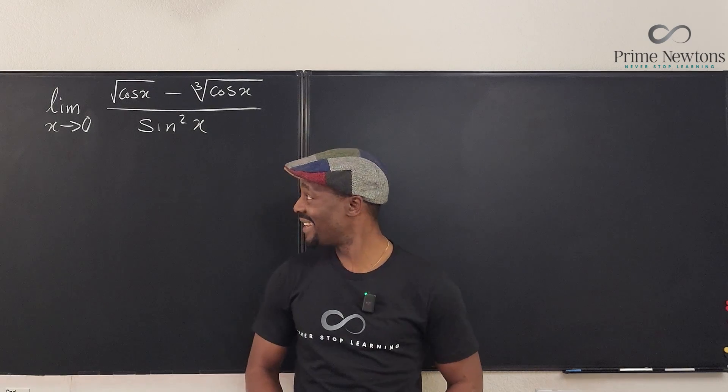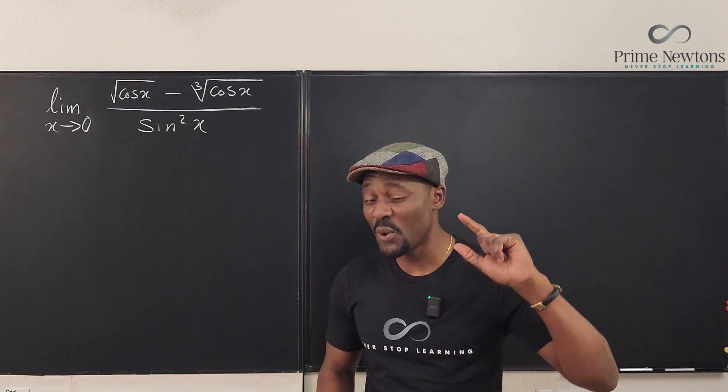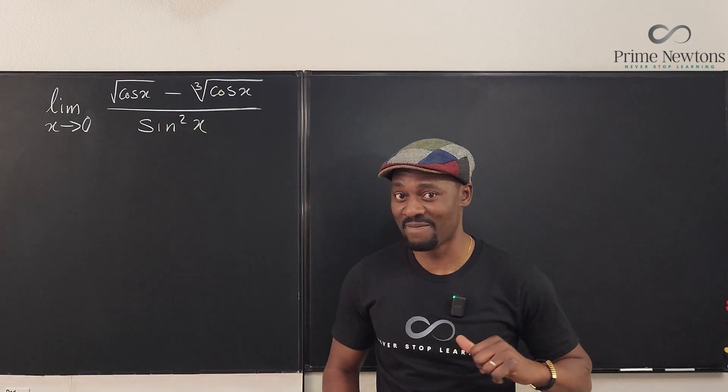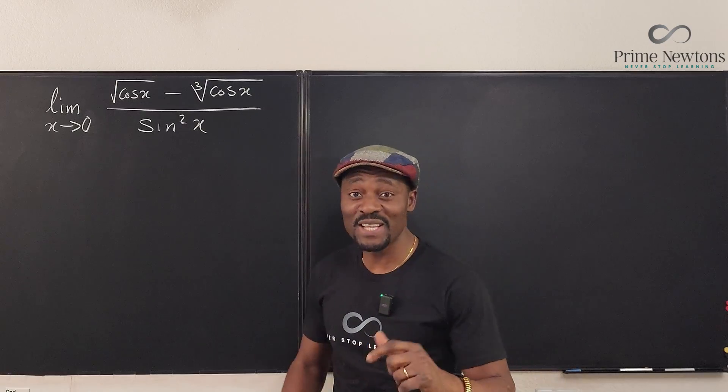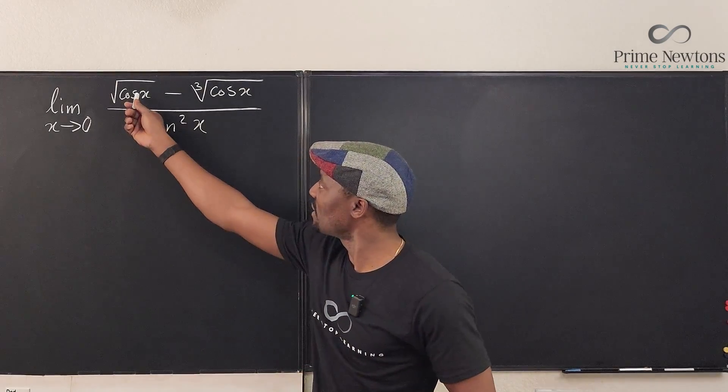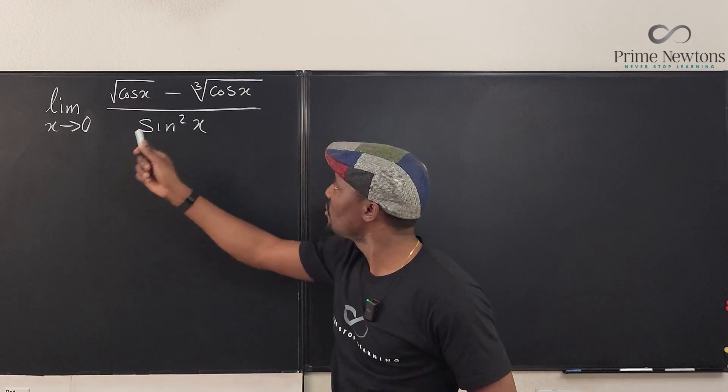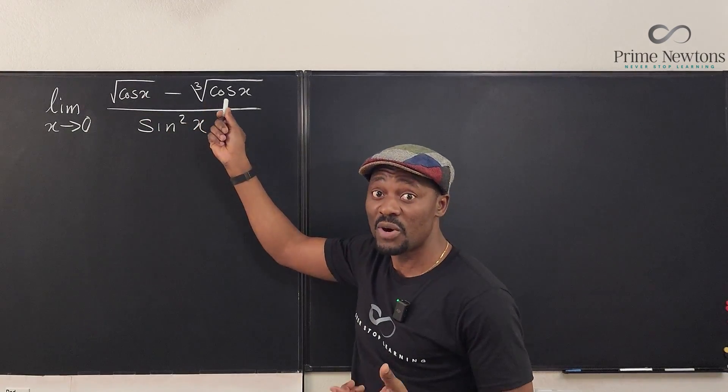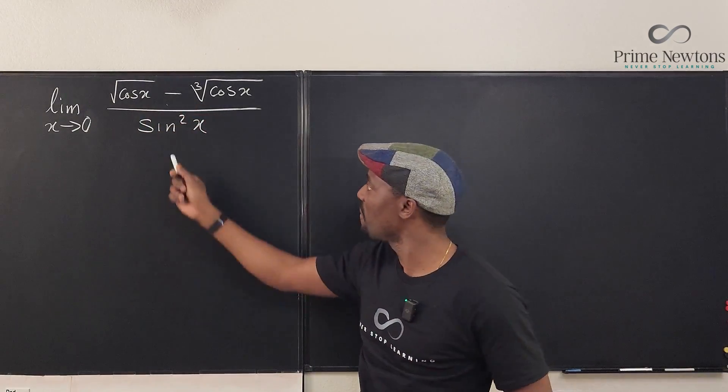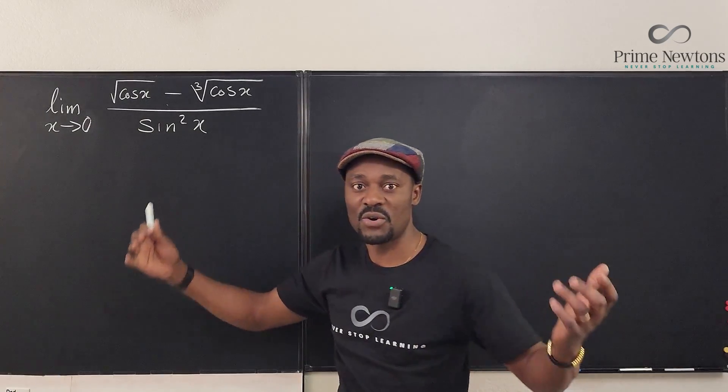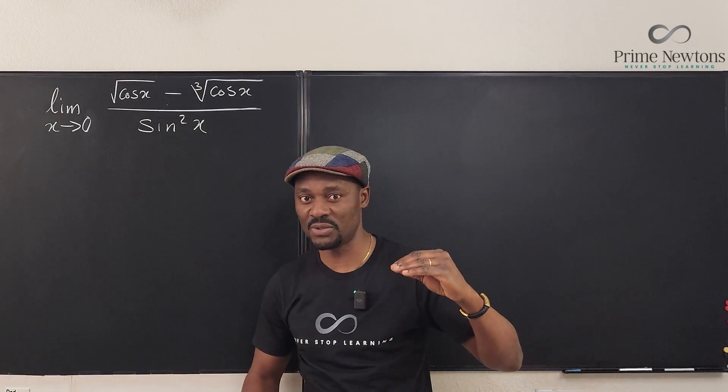Welcome to another video. Let's take this limit as x goes to zero. Now if we plug in zero, cosine x is going to be one. The square root of cosine of one is one, and the cube root of one is one. So we have one minus one gives us zero. The denominator, the sine of zero is zero. So it's a zero over zero situation.